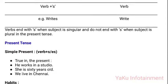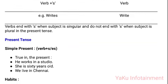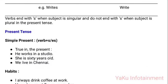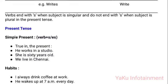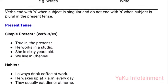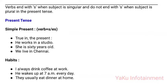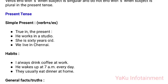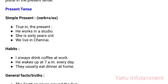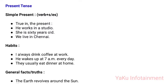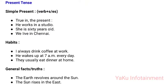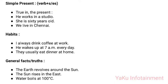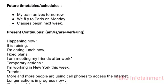Present Tense — Simple Present (verb plus S/ES). Uses: (1) True in the present: 'He works in a studio,' 'She is 60 years old,' 'We live in Chennai.' (2) Habits: 'I always drink coffee at work,' 'He wakes up at 7 a.m. every day,' 'They usually eat dinner at home.' (3) General facts/truths: 'The earth revolves around the sun,' 'The sun rises in the east,' 'Water boils at 100 degrees Celsius.' (4) Future timetables/schedules.